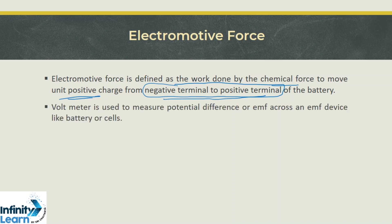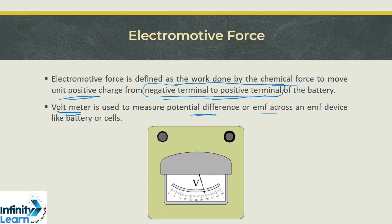Now we have devices like voltmeter which is used to measure the potential difference or EMF across an EMF device like batteries or cells. This is how a typical voltmeter looks like. We can connect the voltmeter across the battery to check its EMF.